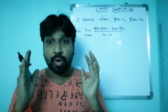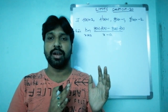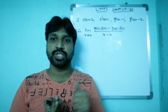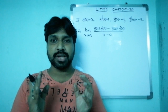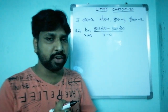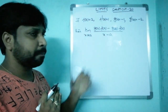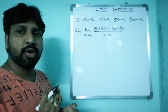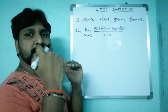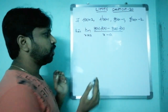Whenever we get a 0/0 form, we apply L'Hôpital's rule — I discussed L'Hôpital's rule in previous videos, please watch those for the rules and regulations. L'Hôpital's rule means: take the derivative of the numerator separately and the derivative of the denominator separately.